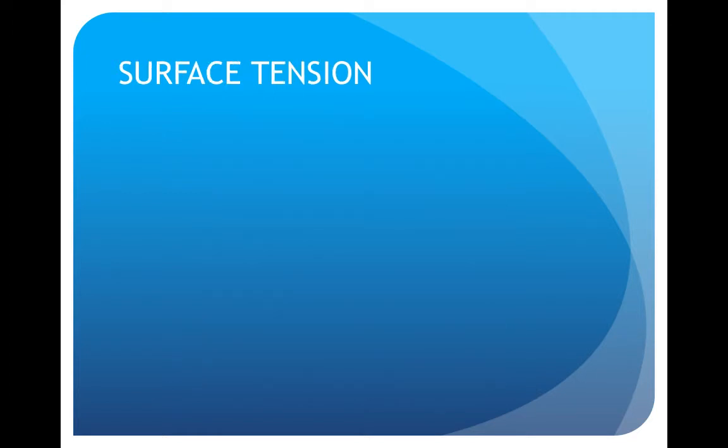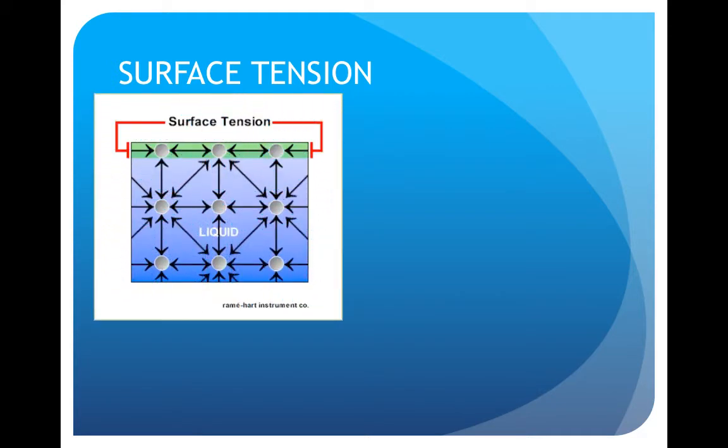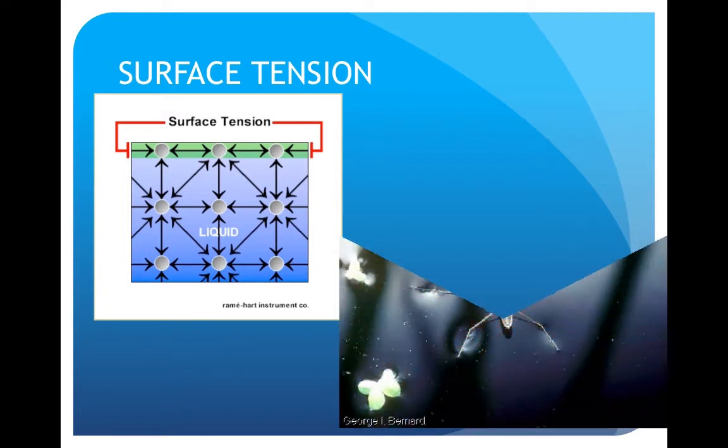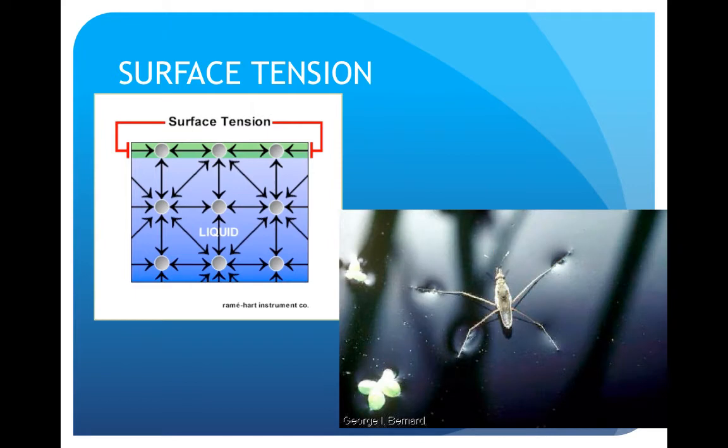Hydrogen bonds also give water an unusually high surface tension. Surface tension is a measure of how difficult it is to break the surface of a liquid. A water strider is an insect that takes advantage of water's high surface tension. It can walk on water even though it is denser.